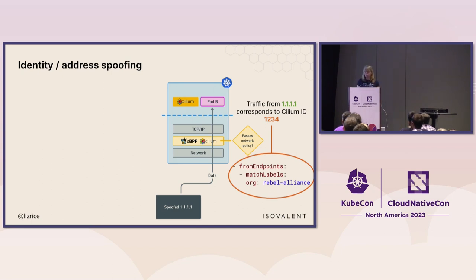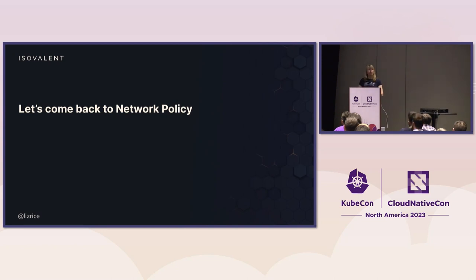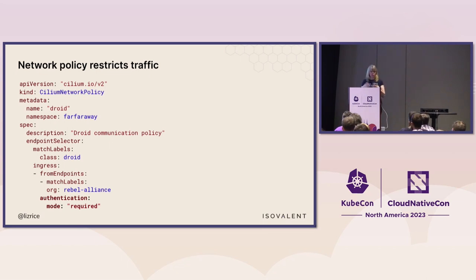IP spoofing is not that common, and probably if you are seeing spoofed IP addresses in your cluster, you have bigger issues. But nevertheless, it's something we want to prevent. So let's come back to our network policy. In addition, we're going to add two lines to the network policy — we're going to say, as well as matching the label-based identity, we require that this communication is authenticated: you must prove you are the security identity you claim to be.